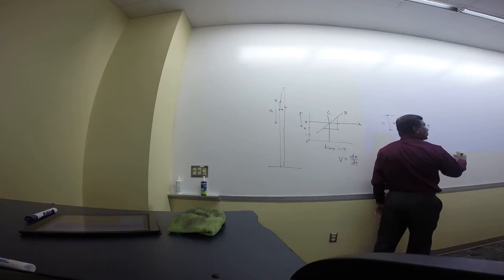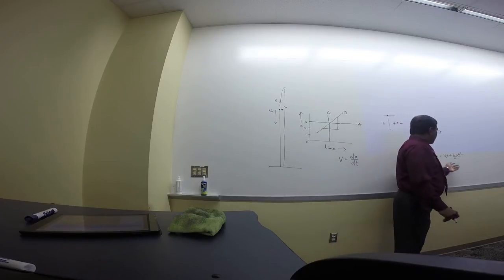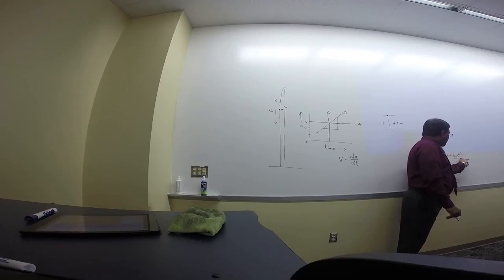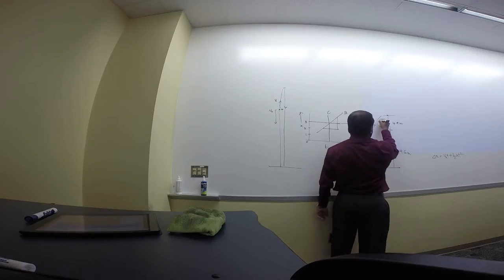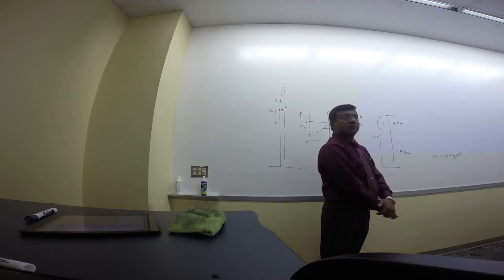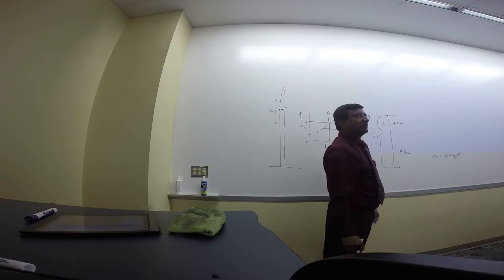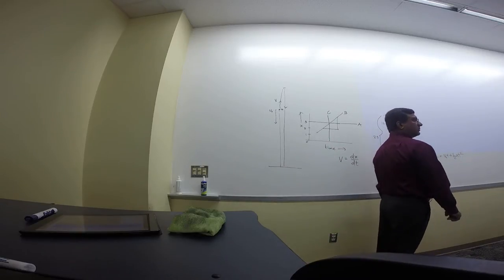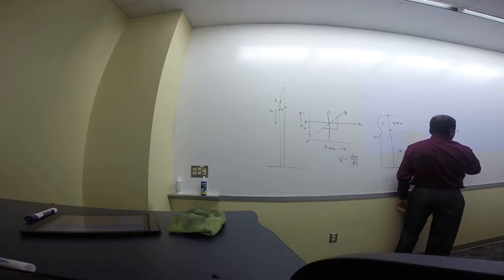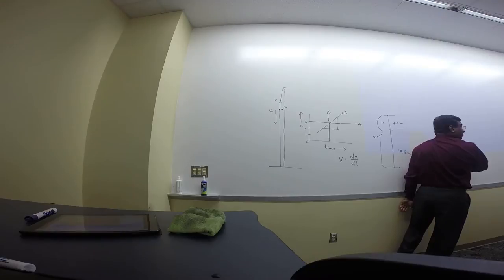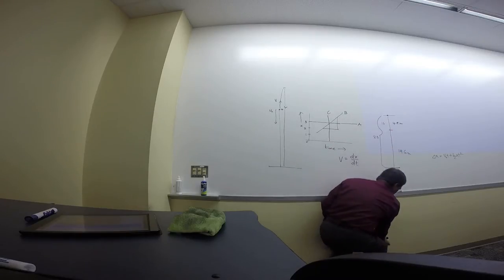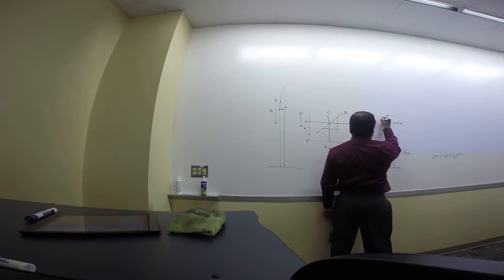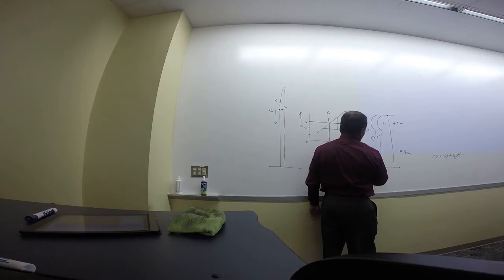In two seconds: ½ × 9.8 × 4 = 19.6 meters. In three seconds: ½ × 9.8 × 9 = 44.1 meters. The displacement in the second second is 19.6 − 4.9 = 14.7 m, and in the third second it's 44.1 − 19.6 = 24.5 m. As seconds elapse, the object travels more and more each second — it accelerates.